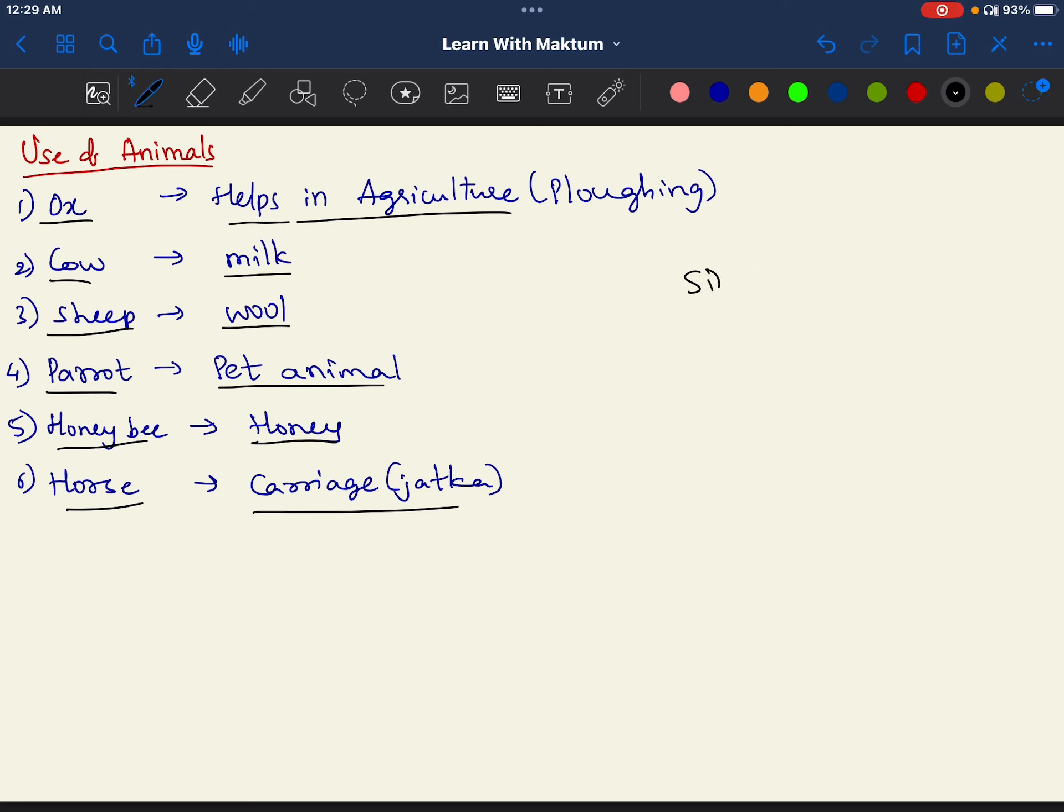We learned similarities between humans and the animals, then we saw differences between humans and animals. Then you studied the terms like herbivores, carnivores and omnivores. Then we studied uses of animals. These are the important things which you should remember for the exam also and in your life. Please go through once again, understand the terminologies, and you should thoroughly know the lesson. That's all for this lesson kids. I am going to see you in the next video with the next lesson. Till that time, take care. Bye bye.